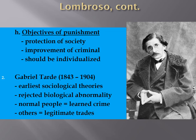Gabriel Tarde was a contemporary of Lombroso and one of the earliest to propose a sociological theory. He rejected the notion of biological abnormality and asserted that normal people learn crime while others learn legitimate trades. Tarde argued quite the opposite of Lombroso: whereas Lombroso said criminality was innate, as well as intelligence being innate, Tarde said sociological and environmental factors led people to become criminals. We are not born criminals — we learn how to become criminals.